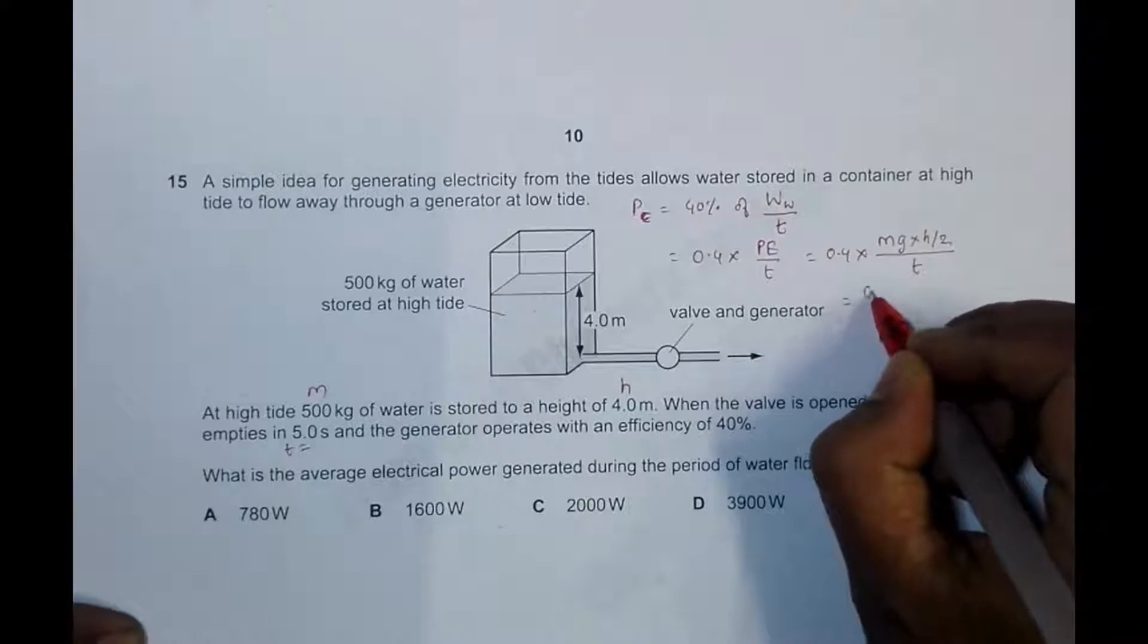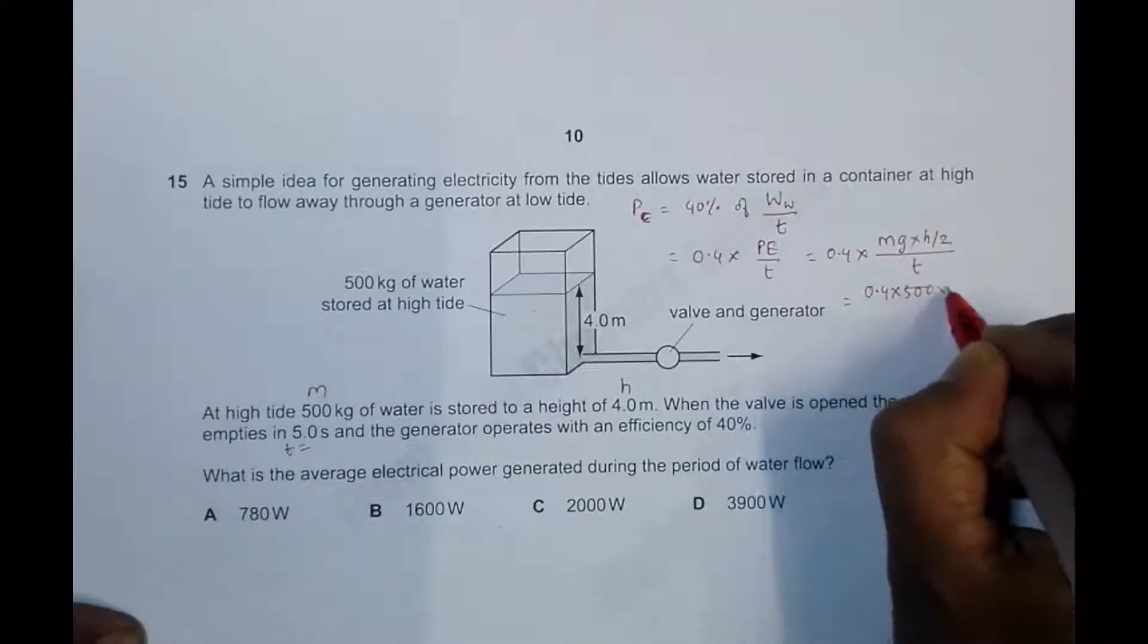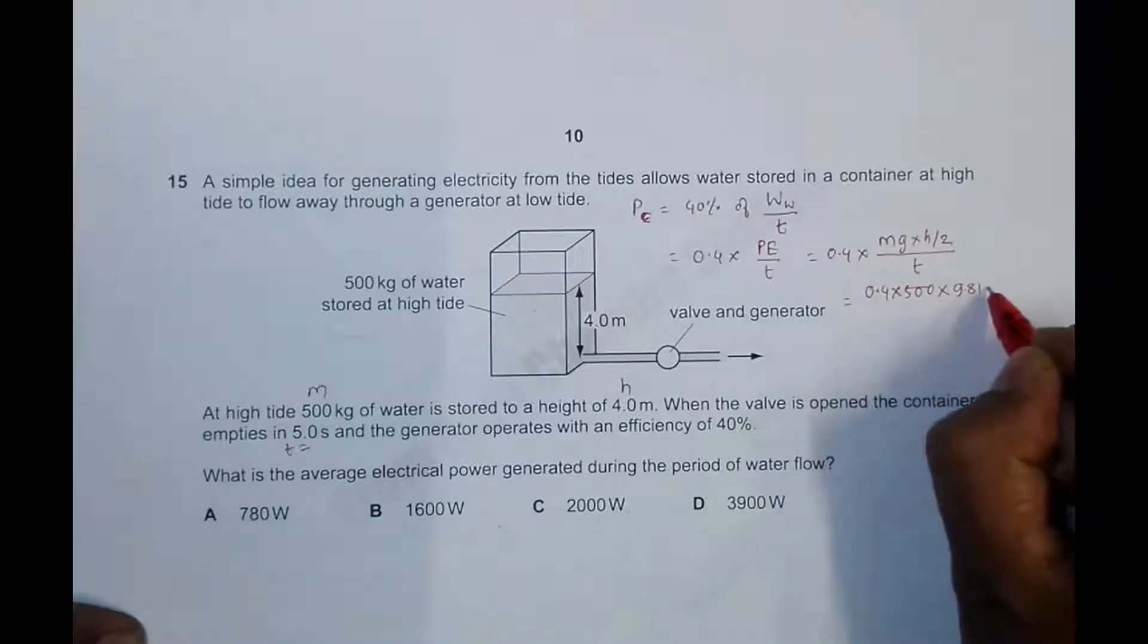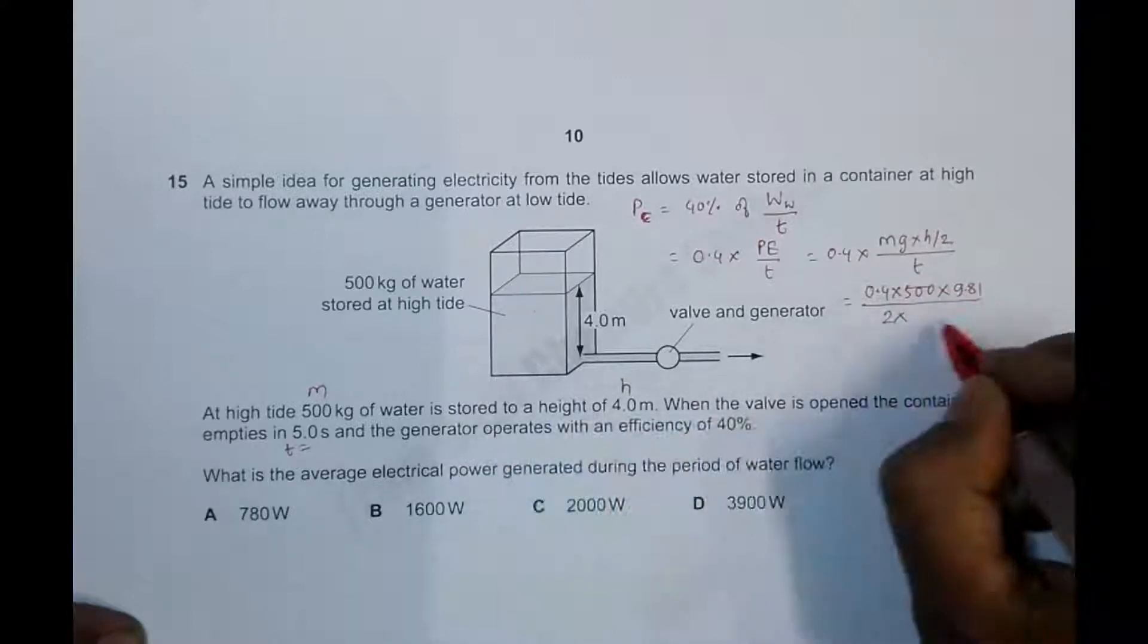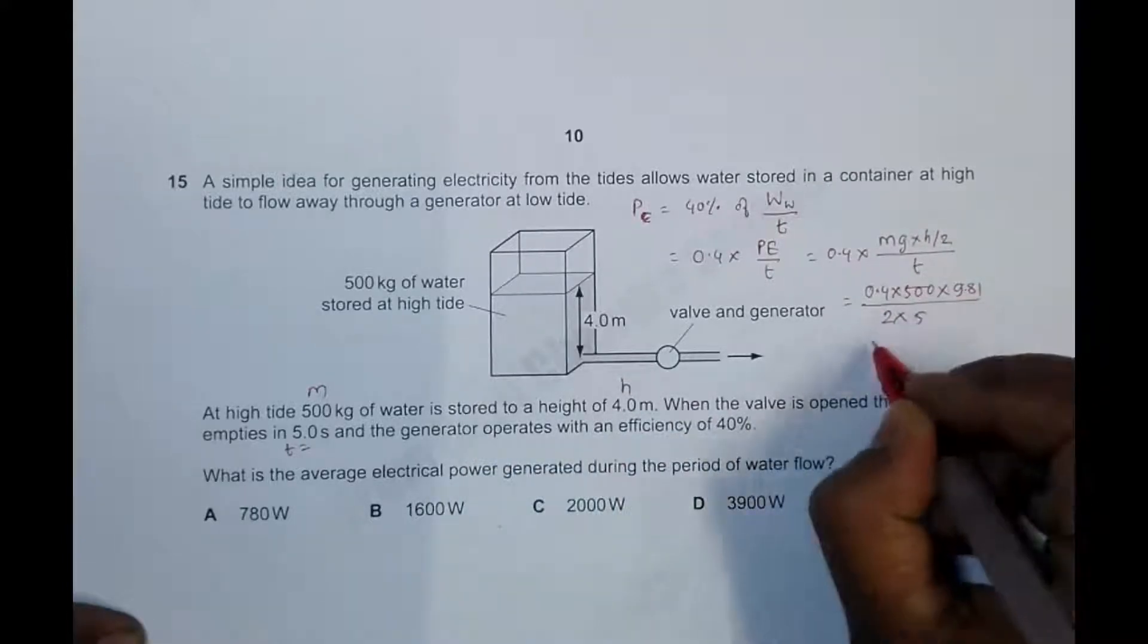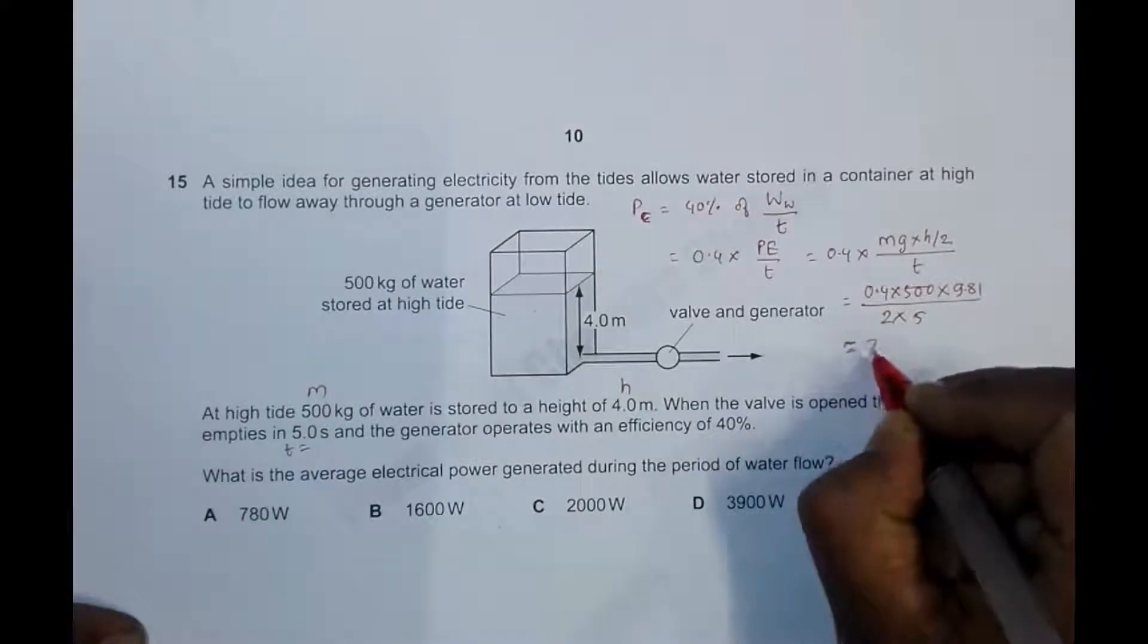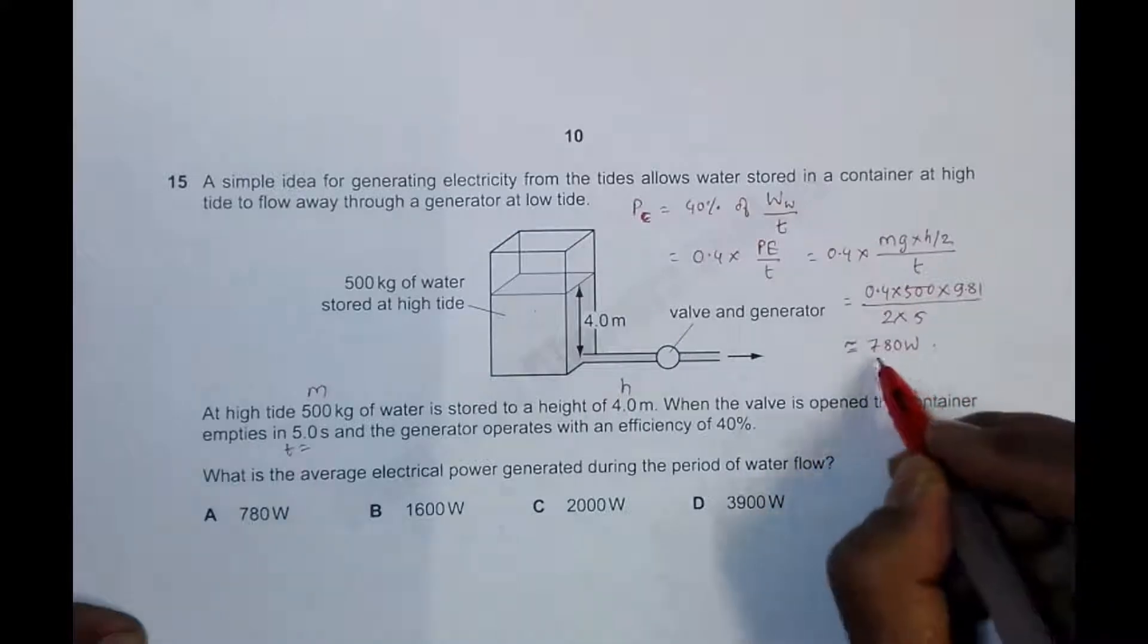We have this equation: 0.4 times M, which is 500, times g, which is 9.81, times h/2, which is 2, divided by t, which is 5 seconds. So ultimately, if we do the calculations in the calculator, it comes to approximately 780 watts.